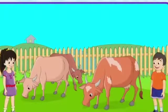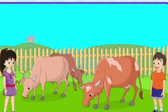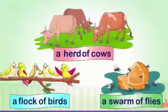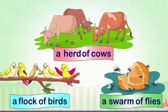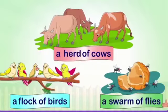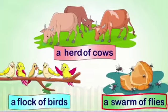Look at this picture. In this picture, Ricky and Mickey are at an animal farm. Now, look at the interesting banners they have come across at the farm: a herd of cows, a flock of birds, a swarm of flies.